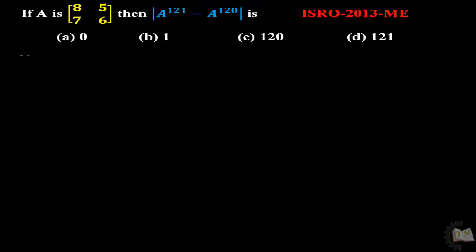Hi guys, this is a question which was asked in the 2013 Mechanical Engineering paper. The question is: if A is an 8×5 matrix, then the determinant of A to the power 121 minus A to the power 120 is what? This question looks pretty interesting — let me solve it.